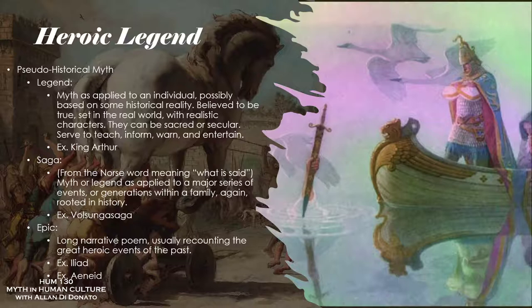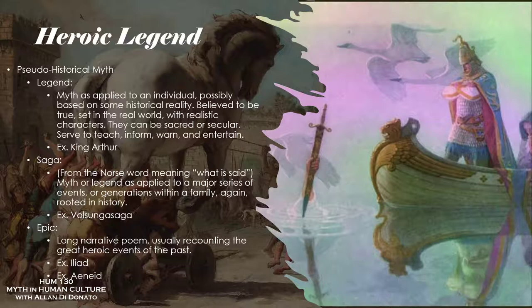A saga — the word actually comes from the Norse word meaning 'to say' — refers to a myth or legend applied to a series of events. It could cover generations within a family, or a number of families and characters interwoven in a very complex narrative. Again, it's rooted in history, purported to be history, and passed off in that way. The big saga we'll look at later this semester is the Volsunga Saga, a Norse story. We tend to use these terms — legend and saga — interchangeably today, like 'the Star Wars saga.'